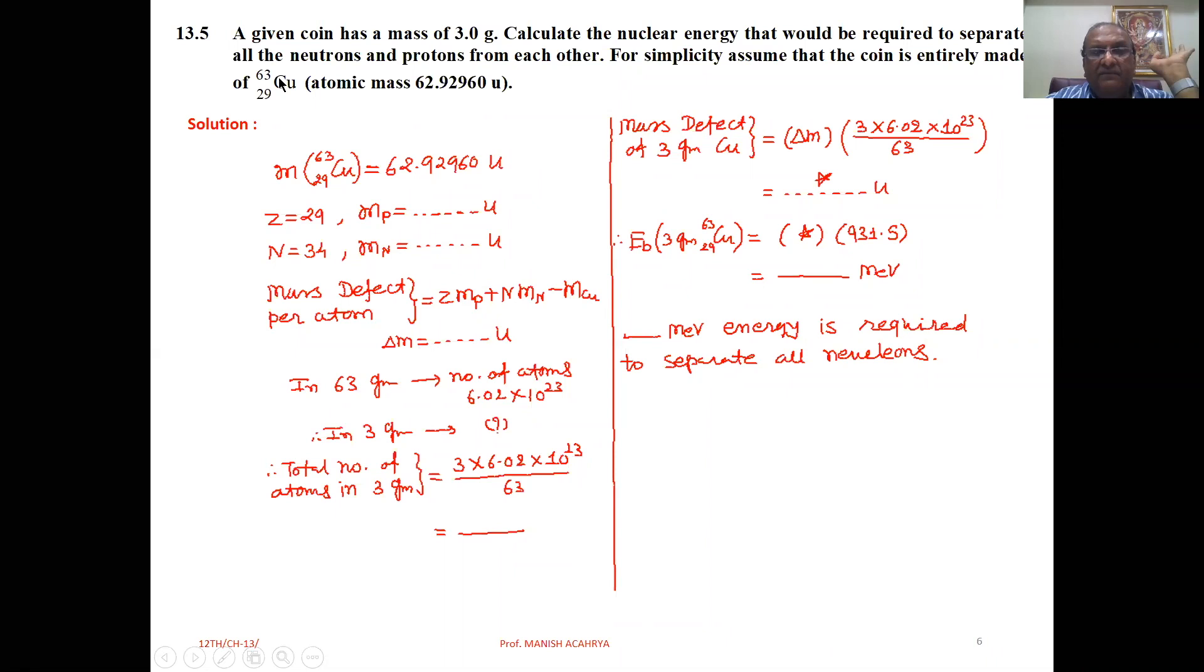Now here, atomic mass number is 63. So if we take 63 gram copper, then that is one mole of substance. So in 63 grams, the number of atoms will be equal to Avogadro number, that is 6.02 times 10 raised to 23.